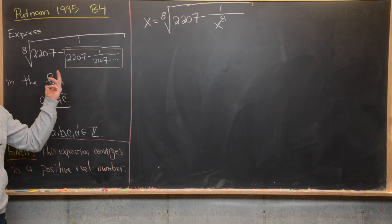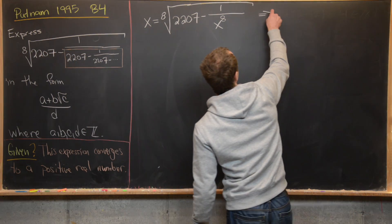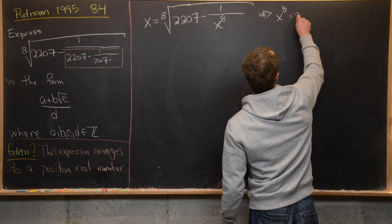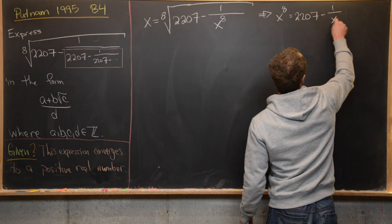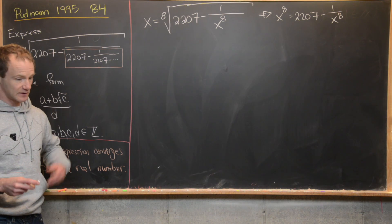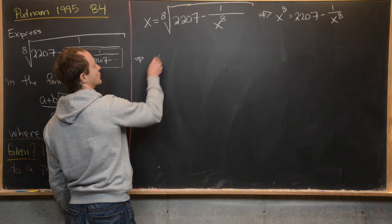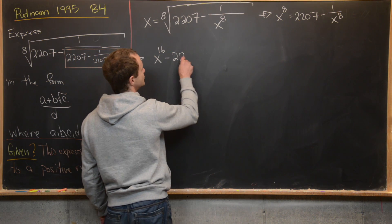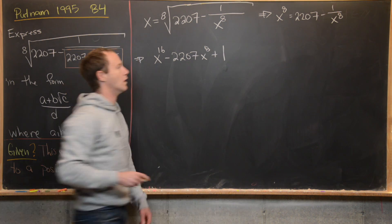So this number, whatever it is, must satisfy this algebraic equation. We'll take the eighth power of both sides, giving us x to the eighth equals 2207 minus 1 over x to the eighth. We can write that as a degree-16 polynomial: x to the 16 minus 2207 x to the eighth plus 1 equals 0.